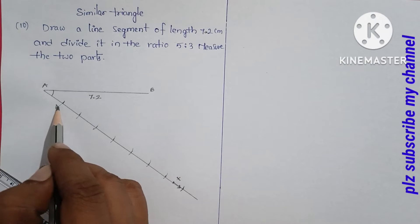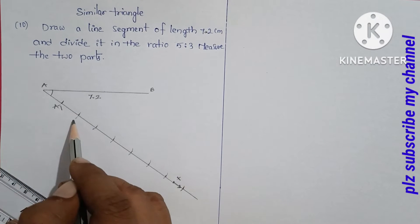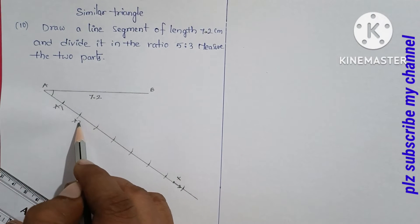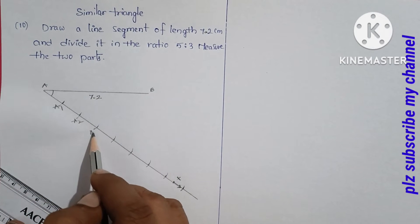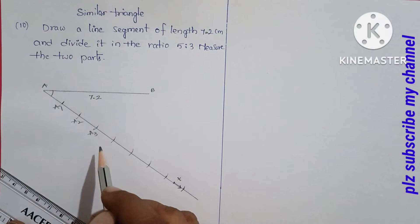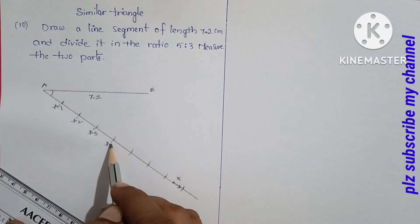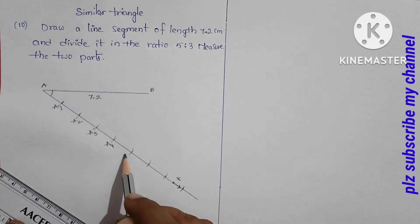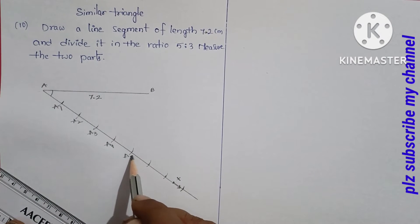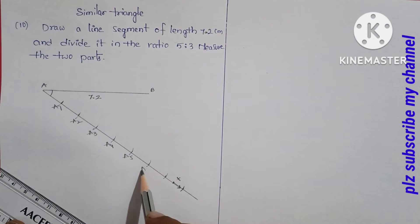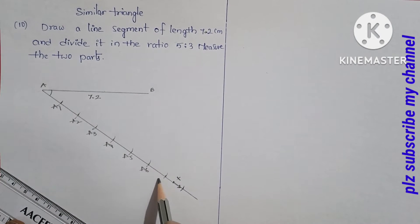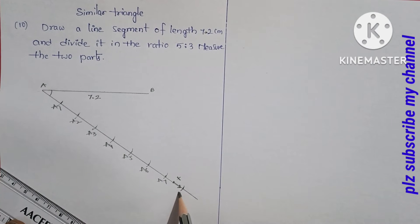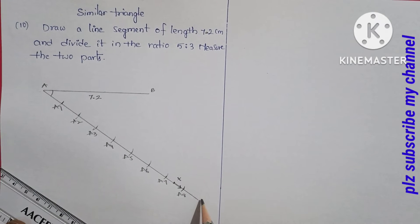Mark points A1, A2, A3, A4, A5, A6, A7, A8 along the ray. Okay?